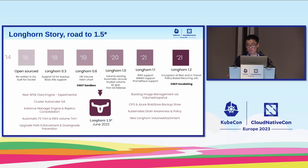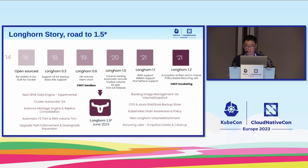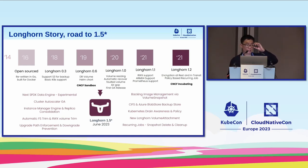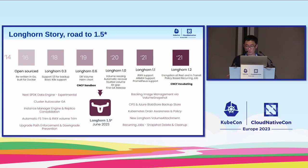We're also introducing a new Longhorn Volume Attachment resource, similar to Kubernetes Volume Attachment, to better handle auto-attach and auto-detach scenarios like recurring jobs. Currently, some corner cases can cause attachment to go into a wrong condition. The new resource addresses that. For recurring jobs: users running workloads like distributed databases that manage their own replication can use recurring snapshot-delete and cleanup jobs to free space without caring about snapshot retention.